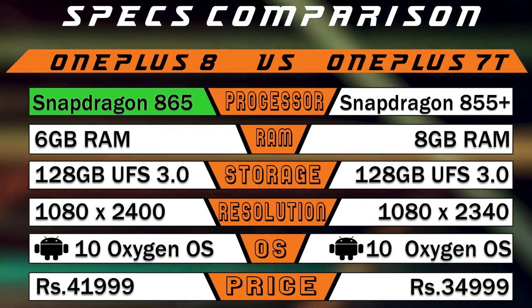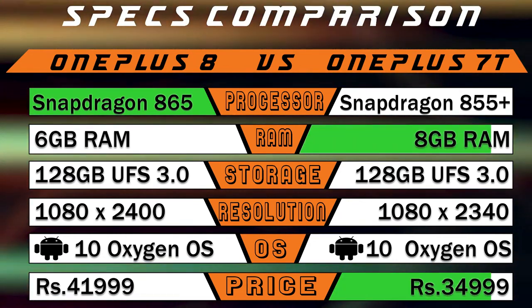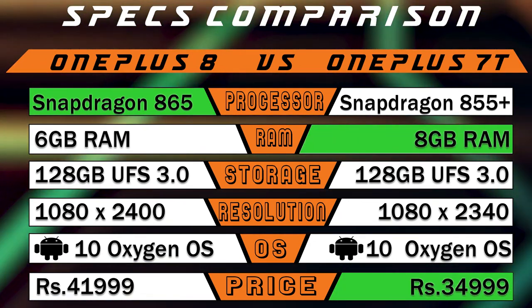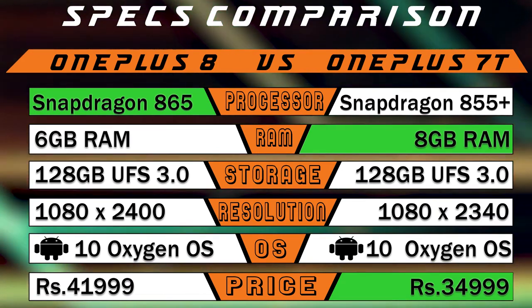In the OnePlus 9, we have 8GB RAM. On our channel, we will compare all our phones on a base level. We will compare the two phones.